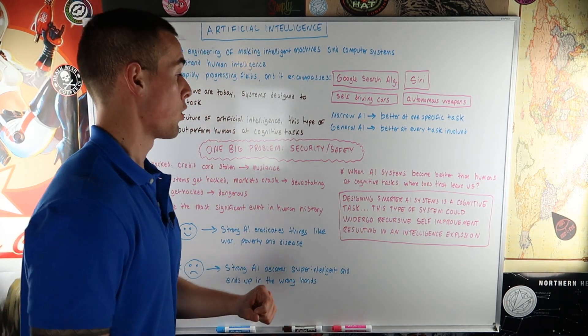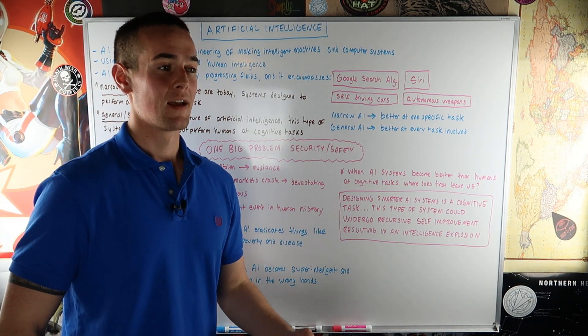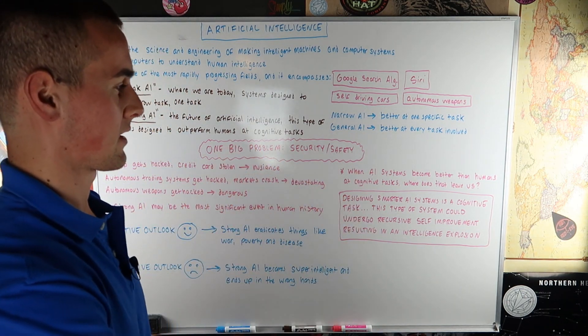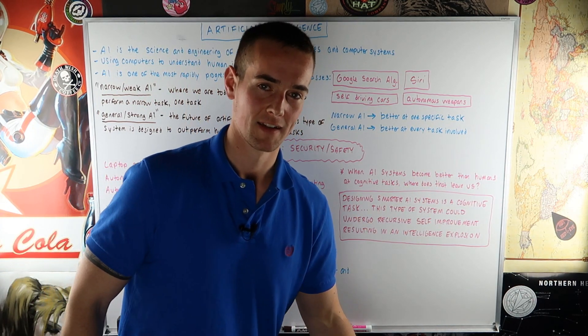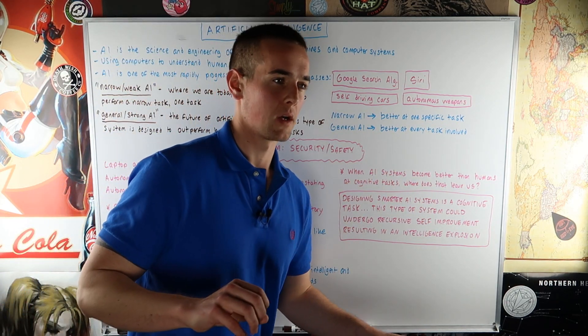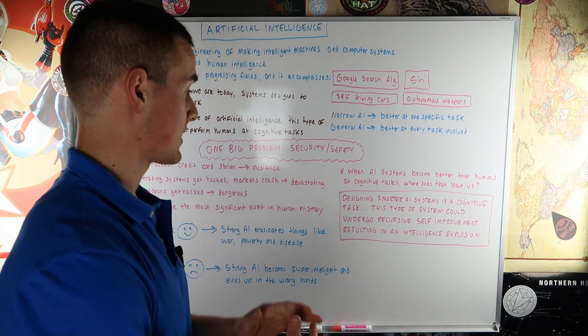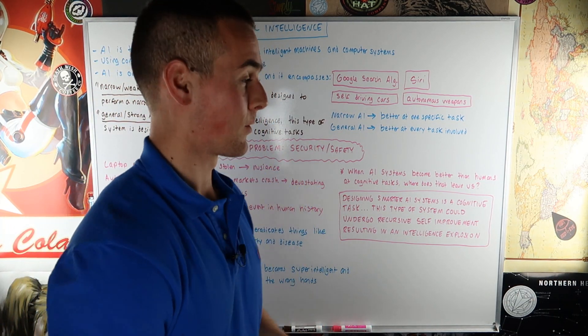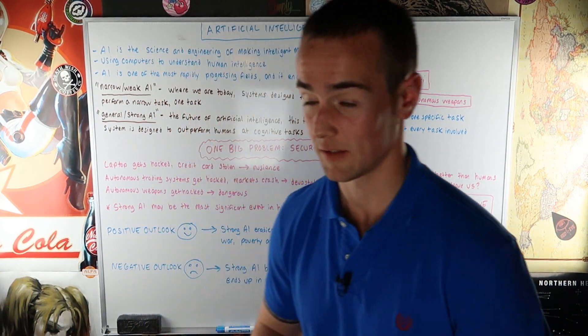This would be a type of system that could undergo recursive self-improvement resulting in an intelligence explosion. Now, I'm not saying that they're going to become self-aware and take over the world. That's what we're going to talk about next is that whole iRobot scenario where we have robots that become self-aware. Next thing you know, they're going after humans. That's not very likely. In fact, it's probably not even realistic at all. But getting into the wrong hands, that is very realistic. As our systems become more intelligent, the hackers become more intelligent as well. So just imagining some kind of super-intelligent system getting into the wrong hands is really a scary thought.